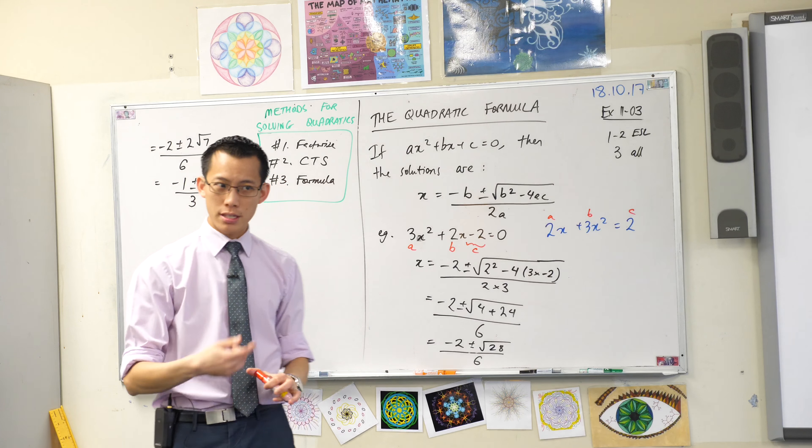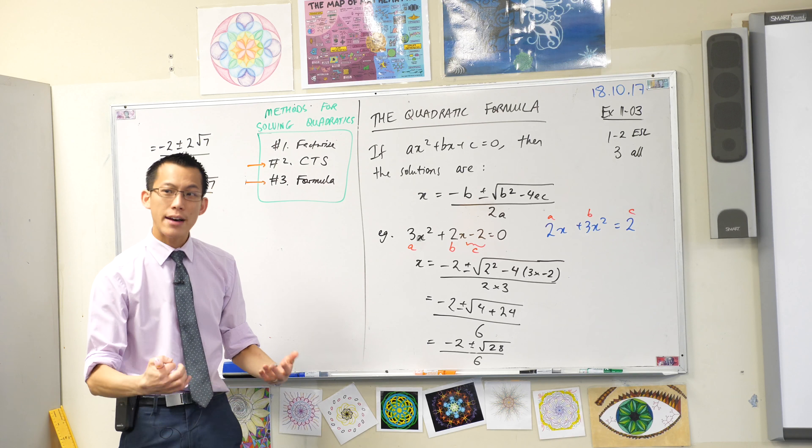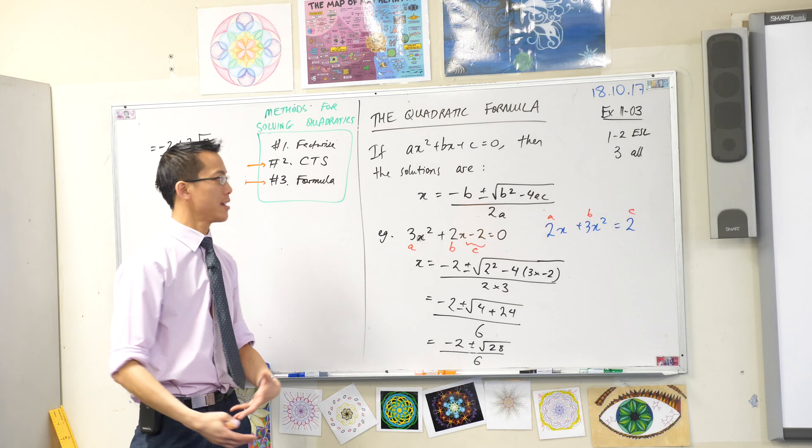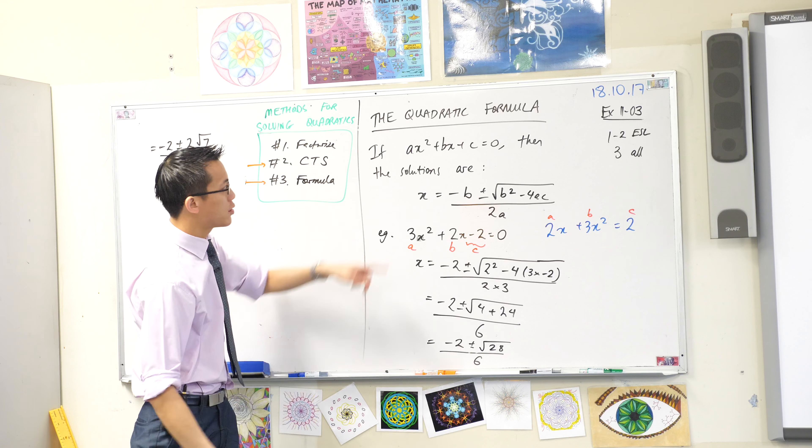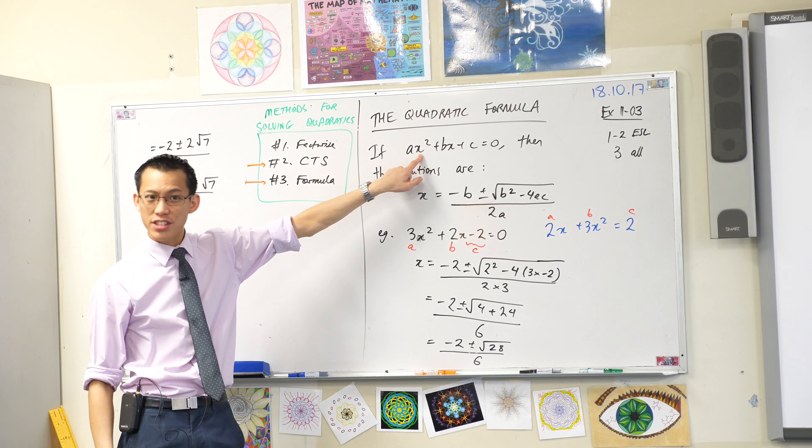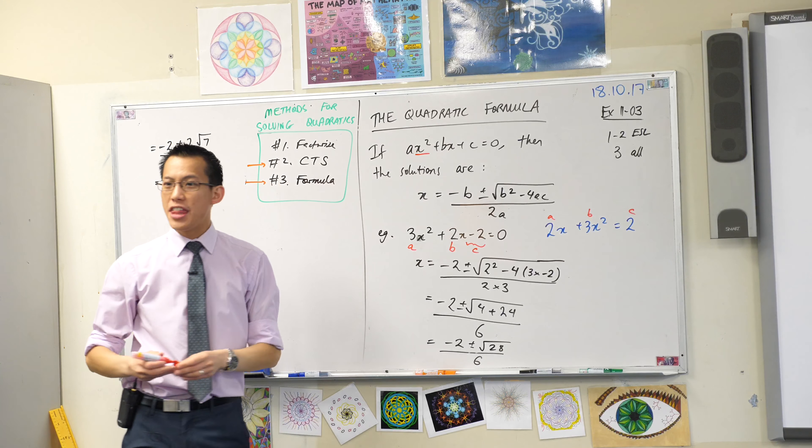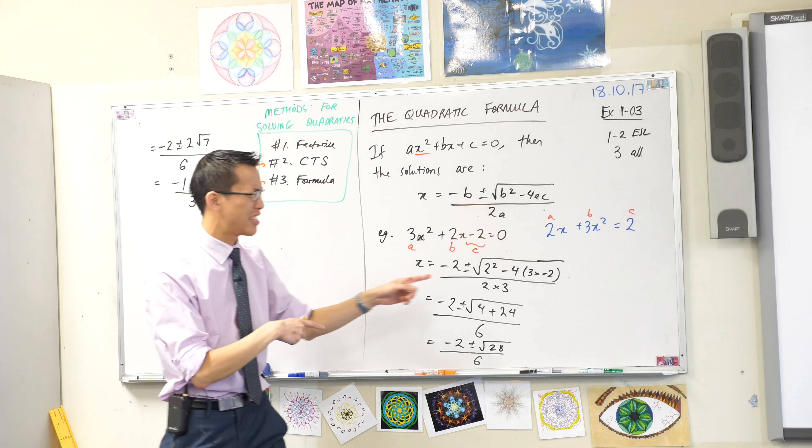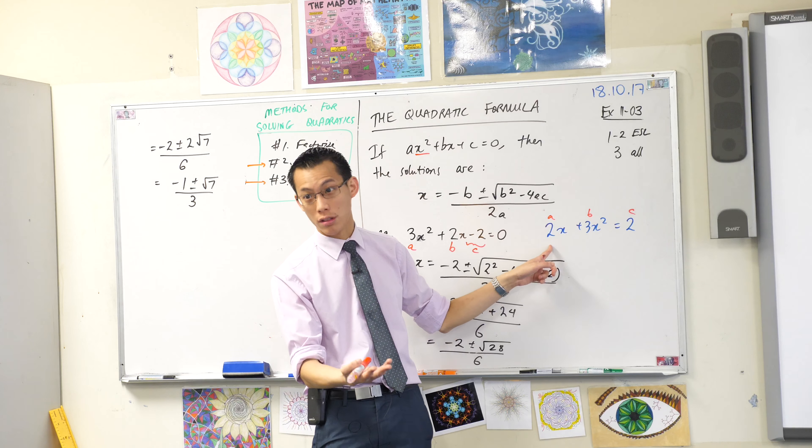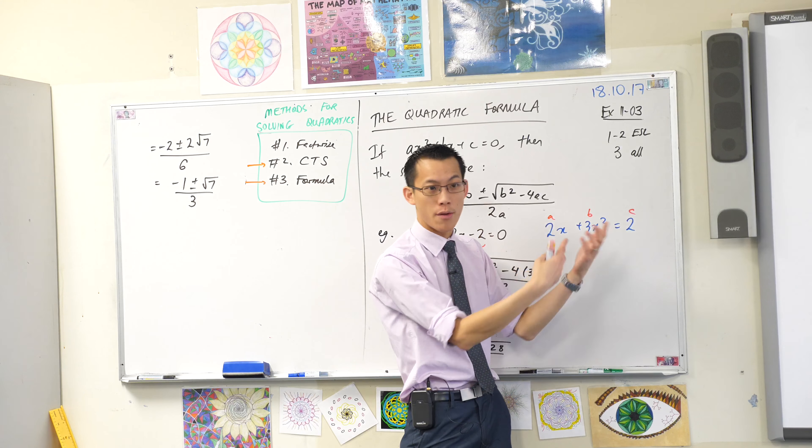So this is wrong for two reasons. For starters, let's have a look at a. What makes a, a? And the answer is it's attached to x squared. The coefficient attached to x squared, that's a. It's not just the one that happens to be first on the line, because we can rearrange these however we like.